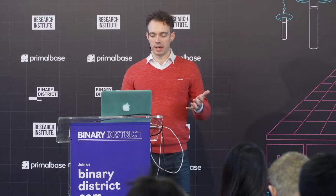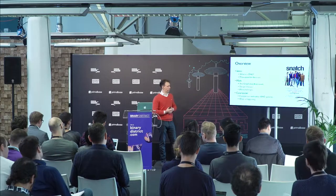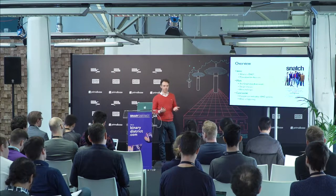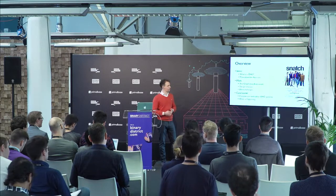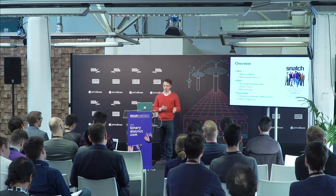What's a DAG? My talk will go along these lines: there's an introduction, what is a DAG, why do we want to use them, then I will talk about this graph chain framework — originally a DAG-based framework we wrote about a while ago, which we've called the graph chain. Then we talk about the design choices, the main challenges, and then a conclusion.